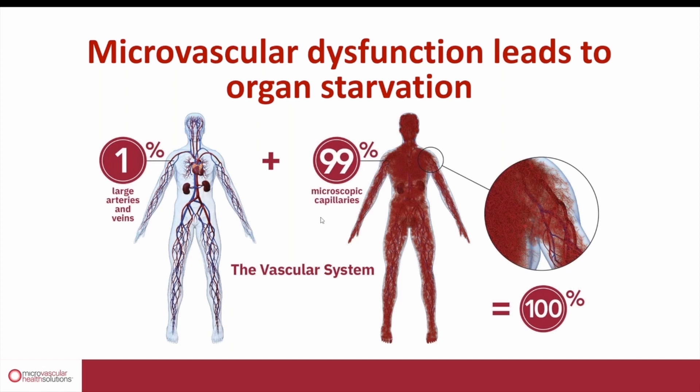If you zoom in with a big microscope, you'll see that most of your vascular system — 99% — is actually the smallest blood vessels where the red cells have to flow through one by one, called the microscopic capillaries.